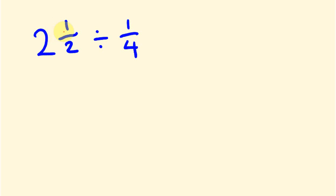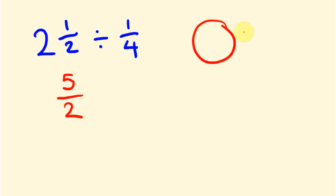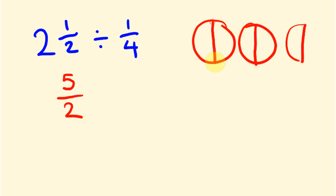The way we convert is: multiply the whole number by the denominator and add the numerator. So 2 times 2 plus 1 gives us 5, over 2. If you imagine 2 and a half drawn as halves, you can count 1, 2, 3, 4, 5 halves — so there are 5 halves. The 2 times 2 gives us 4 halves from the whole number part, and plus 1 gives us that 5. The denominator stays as 2.